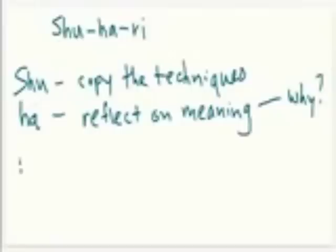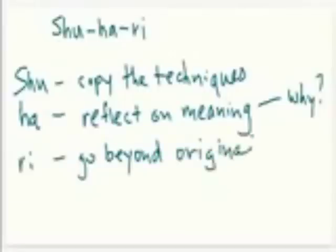Then once you get to the Ri level, now you may go beyond the original teachings. This is the time when you can start to customize the practices for yourself. You can make Aikido your own and personalize it and change the practices. But before that, you're really not supposed to—you're supposed to be copying, then thinking about the why, and then you can move on to customizing.